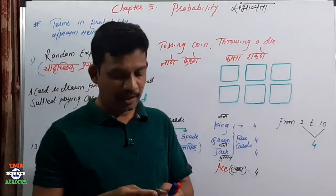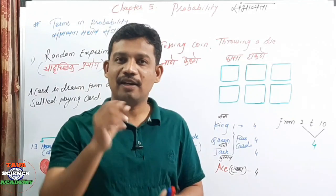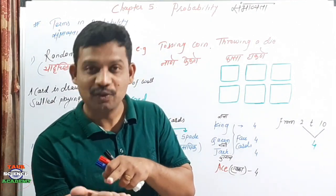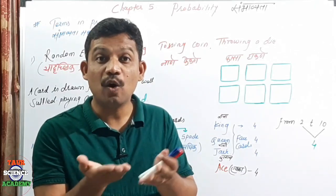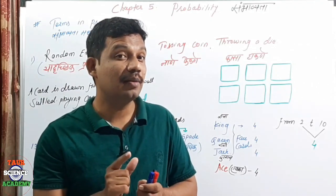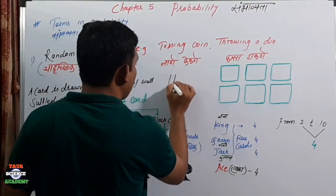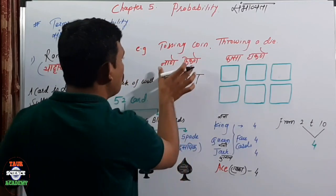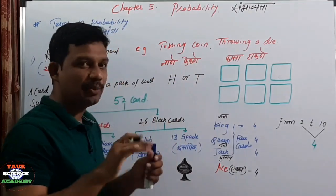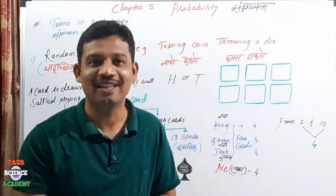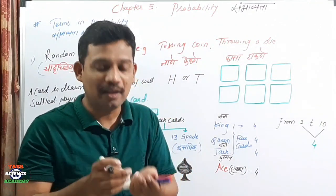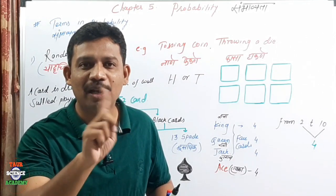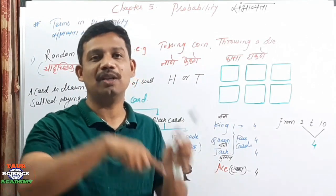For example, we have a one-rupee coin. When you toss it, you already know the result will be either head or tail — but you cannot predict with certainty which one will come. It could be head (chhapa) or it could be tail (kaata). All possible results — head or tail — are known in advance. But which one will actually come, we cannot say for certain.